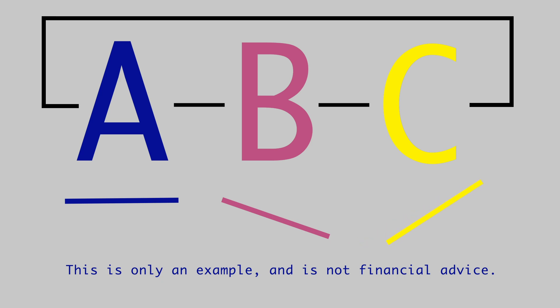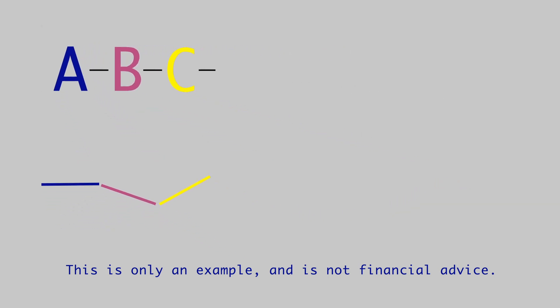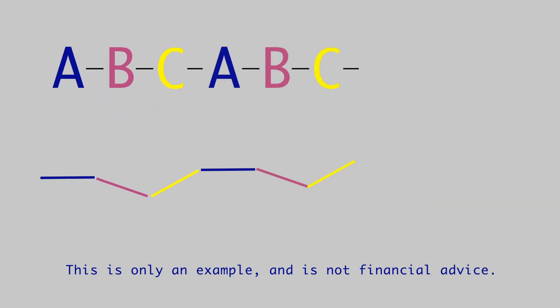When you put the sequence together, it appears like this: A, B, C, and this repeats A, B, C, A, B, C. In a default position, the fractal trends upward.